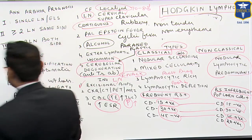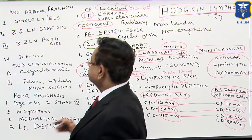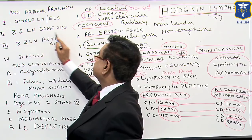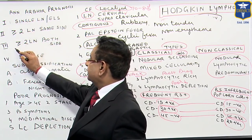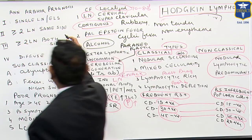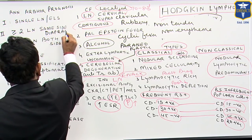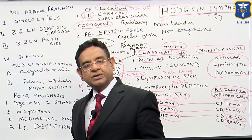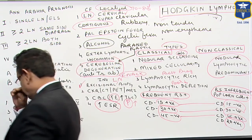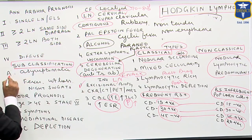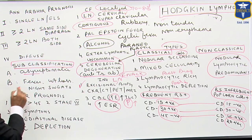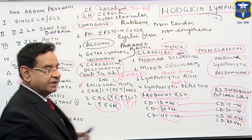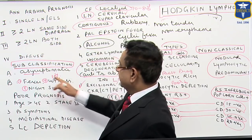Ann Arbor staging indicates prognosis and guides treatment planning. Stage 1: a single lymph node or extra-lymphatic site is involved. Stage 2: two or more lymph nodes but on the same side of the diaphragm. Stage 3: two or more nodes on both sides of the diaphragm. Stage 4: diffuse disease on both sides of the diaphragm. Sub-classification A means asymptomatic, while B means the patient has fever, weight loss of more than 10 percent, or night sweats — these constitute B symptoms.